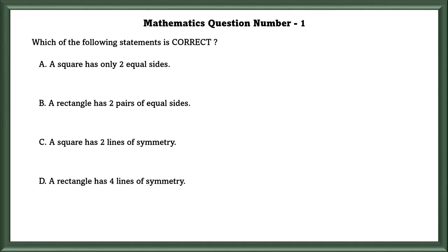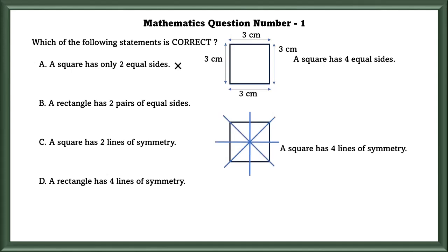Option A: A square has only 2 equal sides. No, a square has 4 equal sides, so this is wrong. Option C: A square has 2 lines of symmetry. No, a square has 4 lines of symmetry, so this is also wrong.